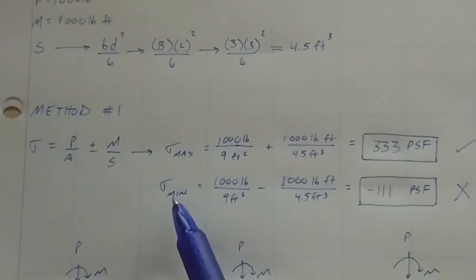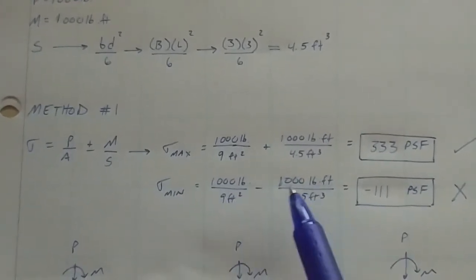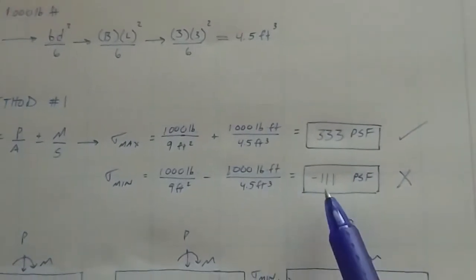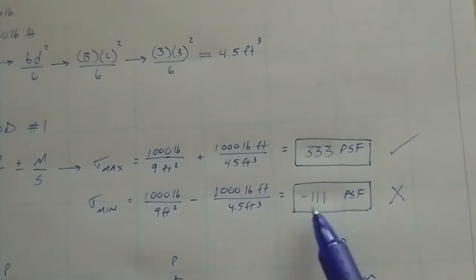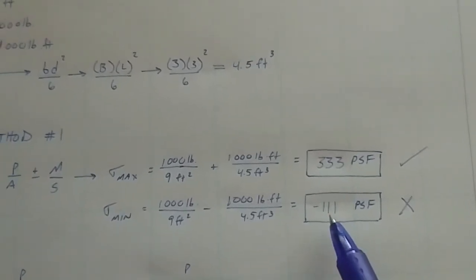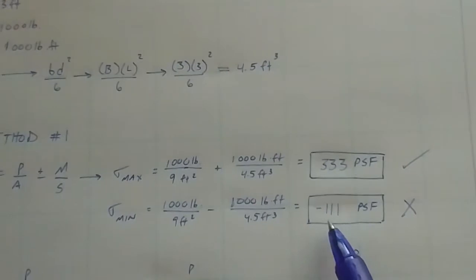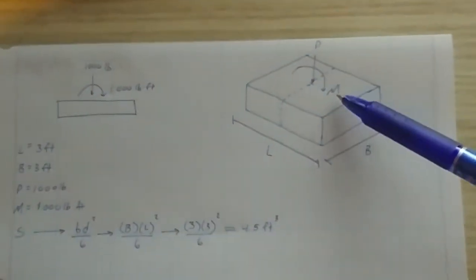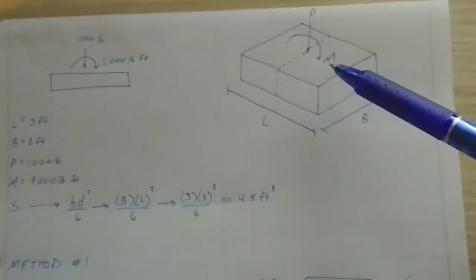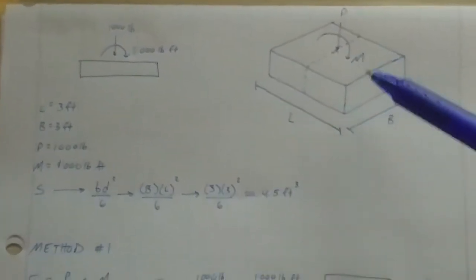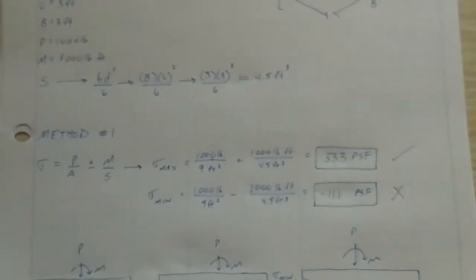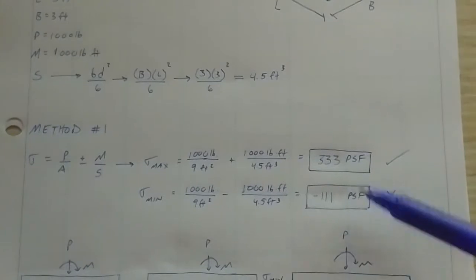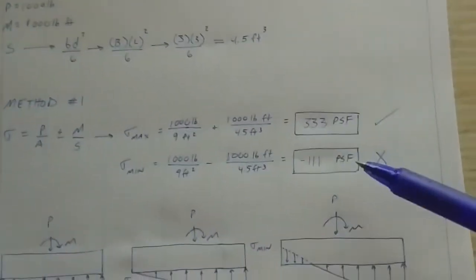Everything seems like it's fine, we're good, we wouldn't think that anything would be wrong here. Now we go with our minimum stress is P over A minus M over S. So same thing, gets us negative 111 PSF. That seems kind of strange. We have a negative stress on the bottom of our footing. So you're like, okay, well maybe that's just what it is because there's a big moment being cranked in here, so that makes sense. And I guess, okay, I got the right answer, moving on. Well, that is going to be our red flag for method one.